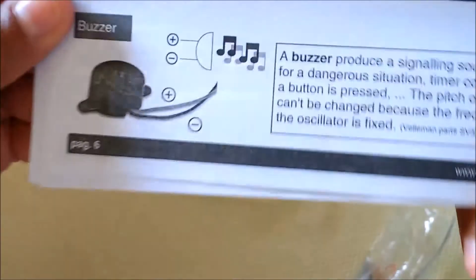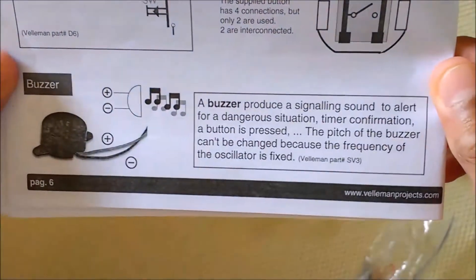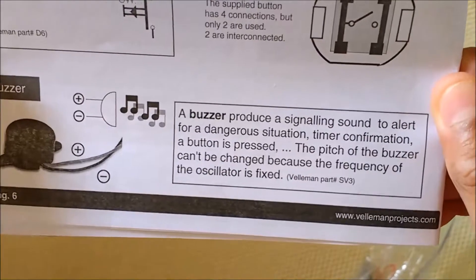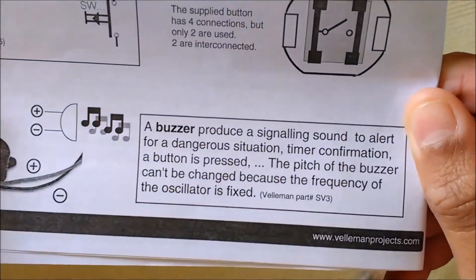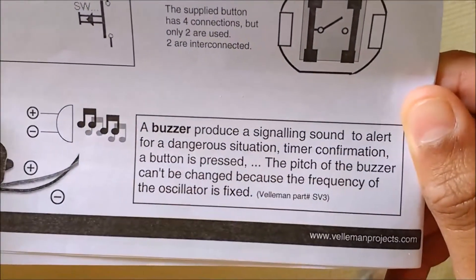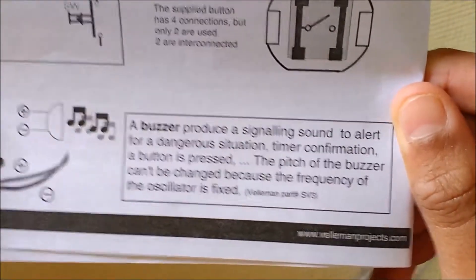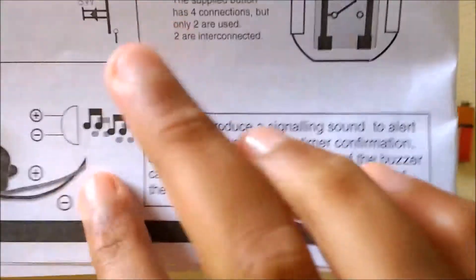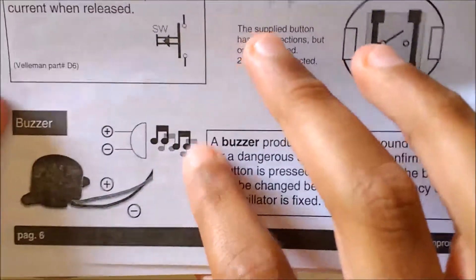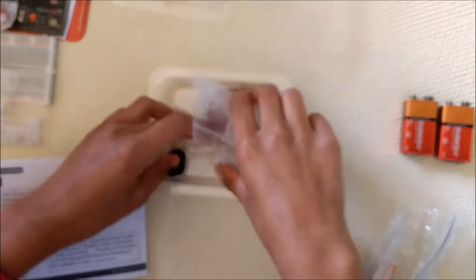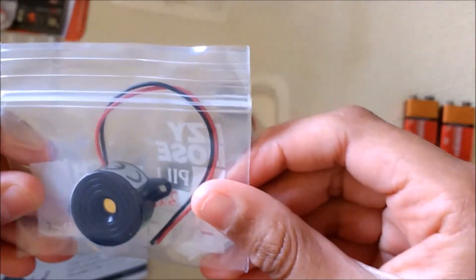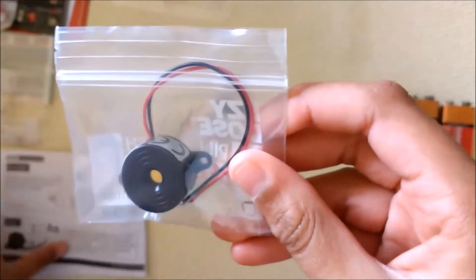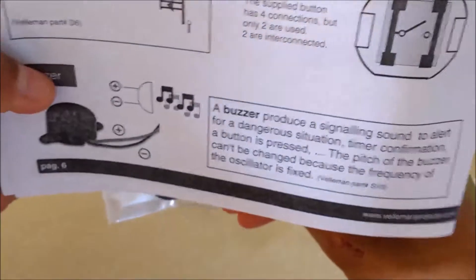After that is the buzzer. The buzzer produces a signaling sound to alert for a dangerous situation, timer confirmation, a button press. The pitch of the buzzer can't be changed because the frequency of the oscillator is fixed. It does not make music, it's a very loud high-pitched noise. I might show you it towards the end. Here's what it looks like. The black is the negative and the red is the positive.